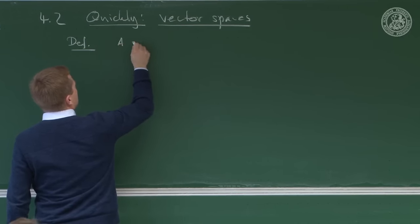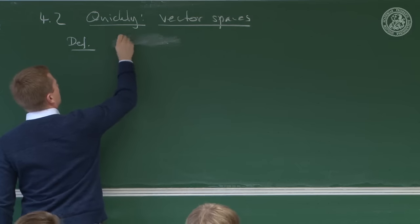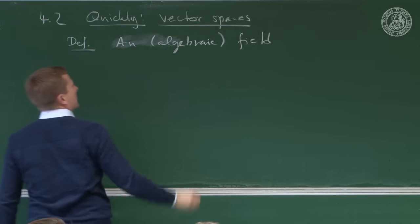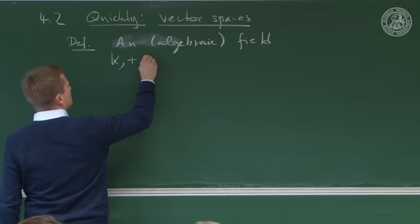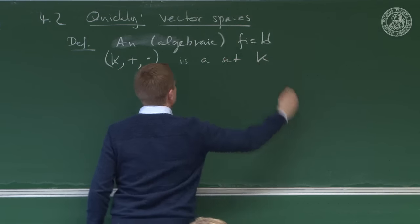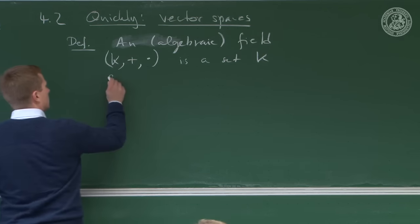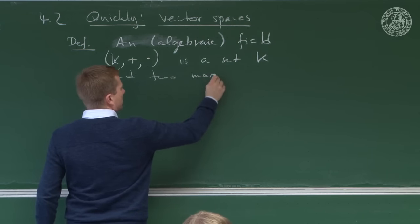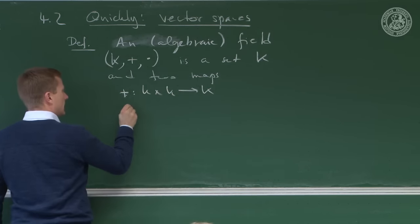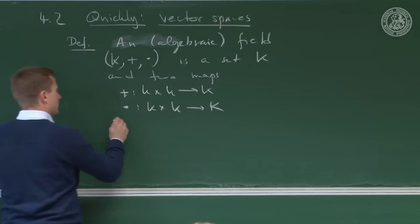A field — an algebraic field, but mathematicians just call it a field — is a triple (K, +, ×). K is a set together with two maps: plus, which takes two elements in K and maps to K, and multiplication, which also takes two K elements and maps to K, that satisfy certain axioms.